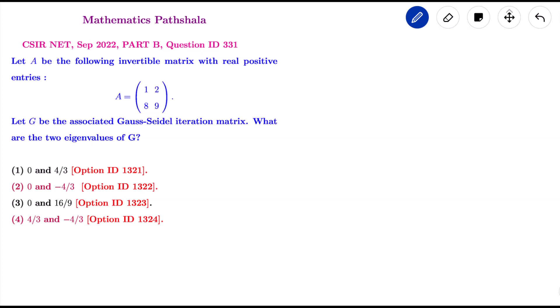Welcome to Mathematics Pathshala. I am solving CSIR NET September 2022, Part B, Question ID 331. Let A be the following invertible matrix with real positive entries. Let G be the associated Gauss-Seidel iteration matrix. What are the two eigenvalues of G?